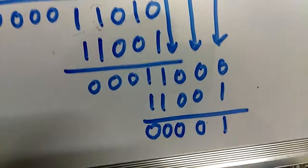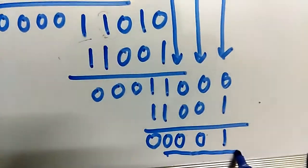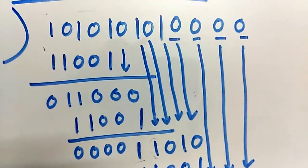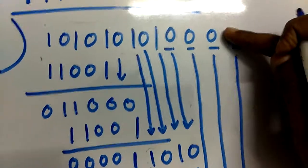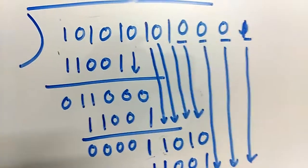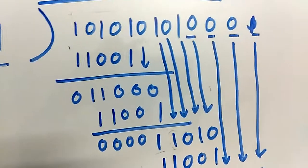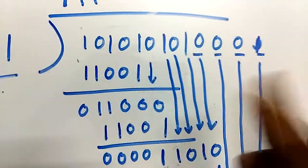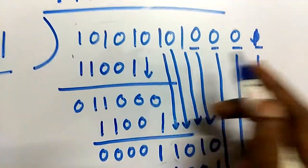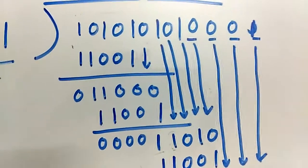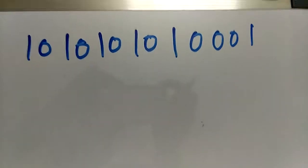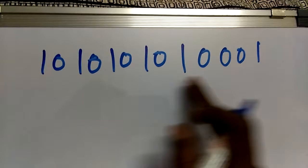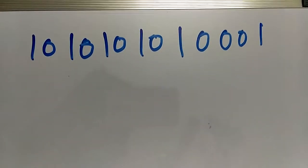The last four bits form our CRC value, replacing the initial zeros we appended. So this is the n-bit CRC added to our data word. This combined data word with CRC is sent to the receiver. The receiver takes the whole bit sequence and performs the same polynomial division.